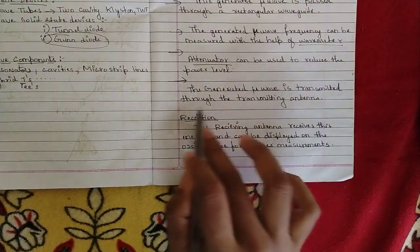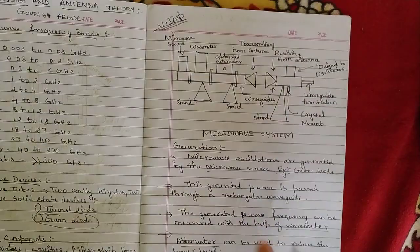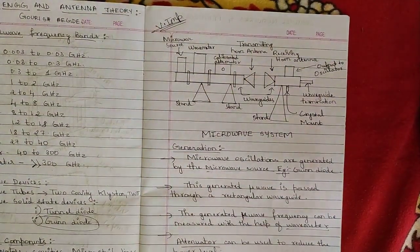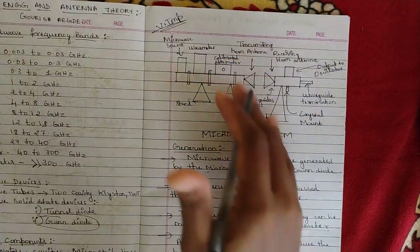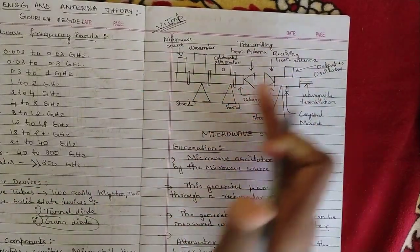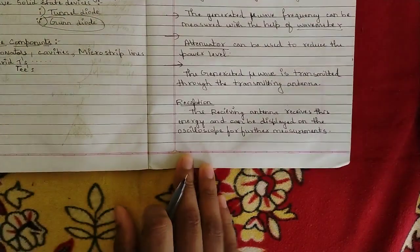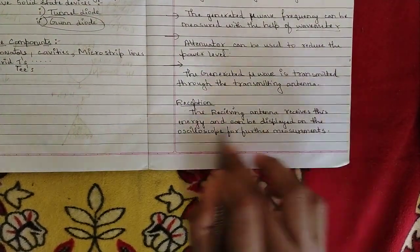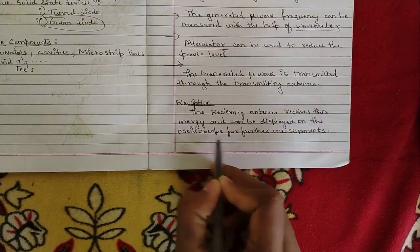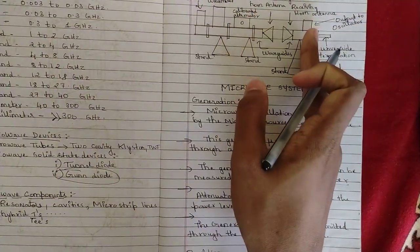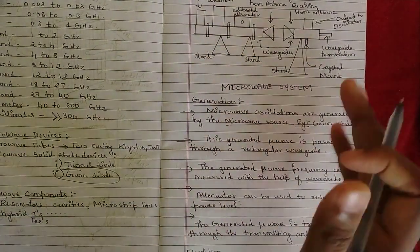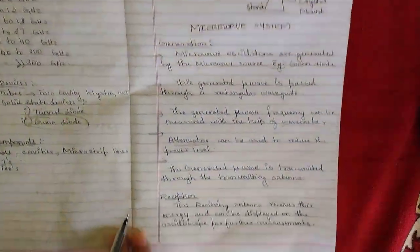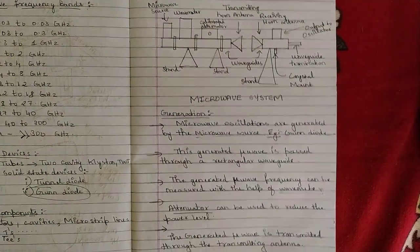After the power level is checked and reduced, the microwave passes through the transmitting horn antenna via wave guides to the receiving horn antenna, and the output is generated. The receiving antenna receives this energy, which is displayed on the oscilloscope for further measurements. This completes the brief overview of the microwave system.